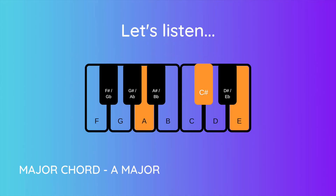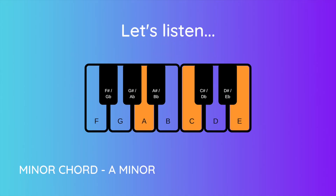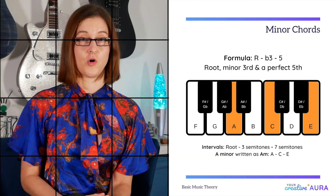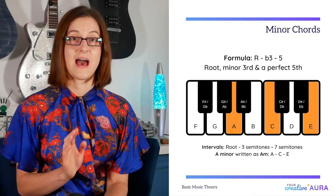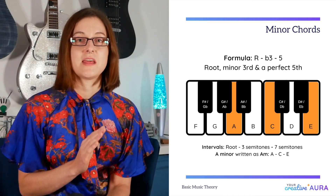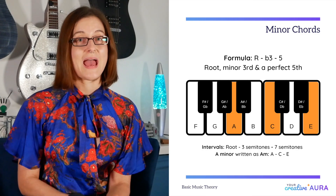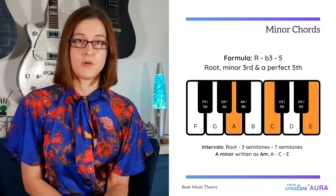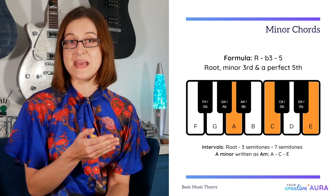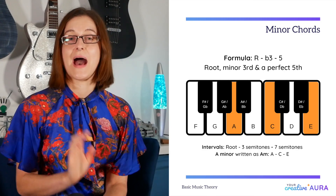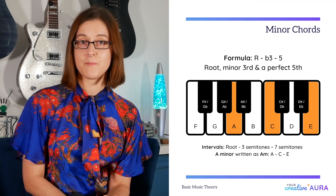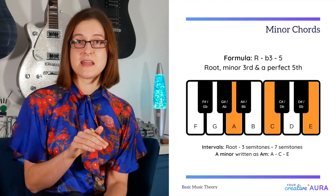We call that middle note that's been flattened a flat third. The minor chord formula is root, flat third, and fifth, because the third note is one semitone lower than the note from the major chord. An A minor chord is written with its root note plus 'min' or just a single lowercase 'm' afterwards. Therefore A minor will be written as 'A min' or 'Am'.